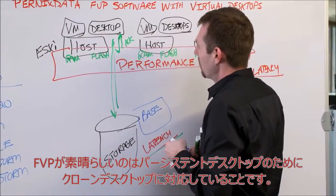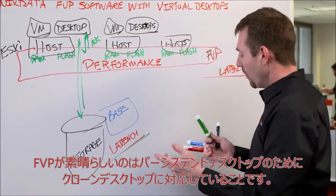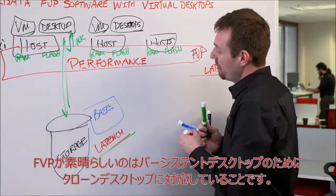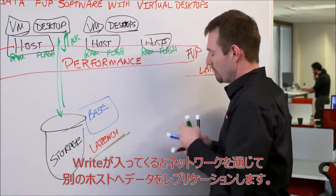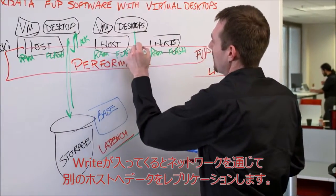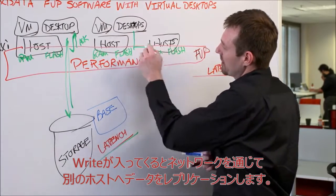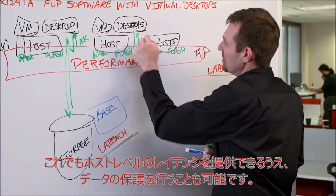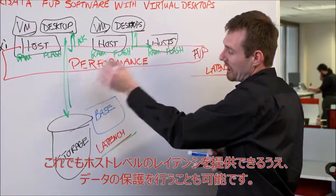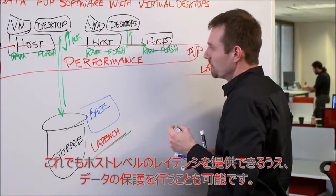The beauty with FVP is that if we did have full clone desktops — fully persistent — then as writes come in we can actually replicate across the network to another host. We're still seeing local host-level latency while also protecting the data.